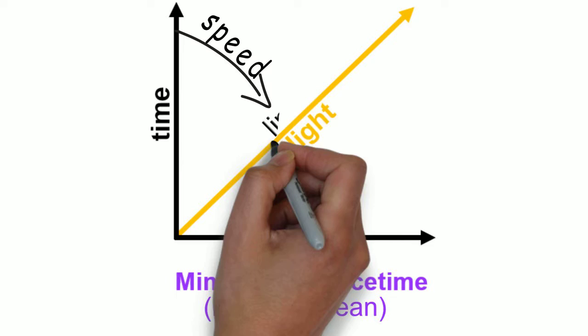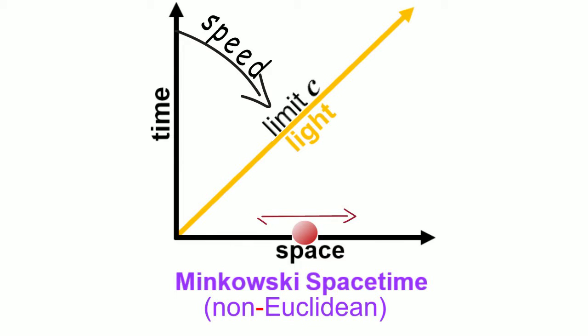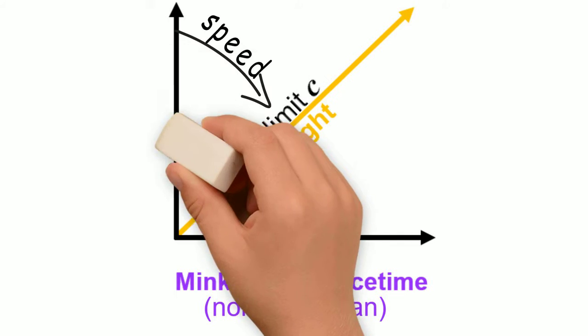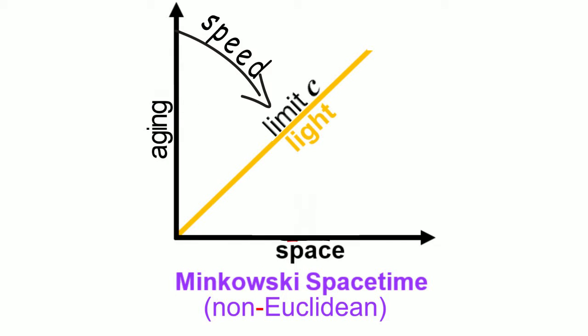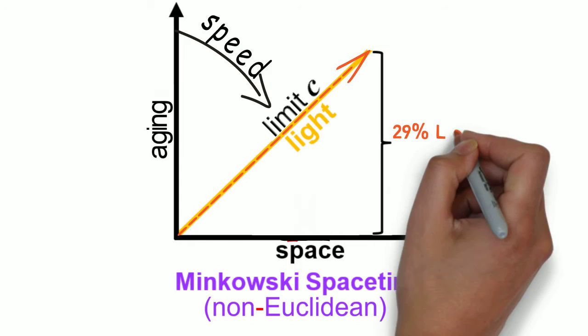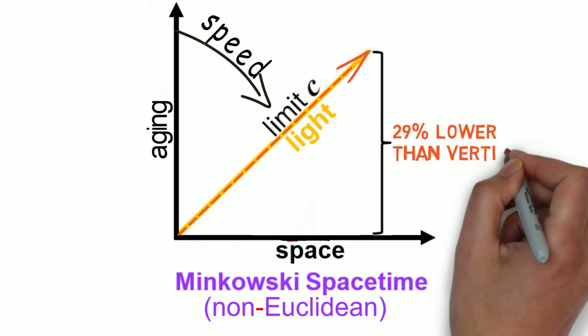Speed limit c assures that purely spatial displacement is impossible, as it would be instantaneous. Minkowski's vertical coordinate is elapsed time, or aging, for observers at rest. It then appears that light, with slope 1, ages only about 29% slower.